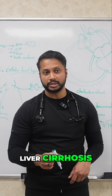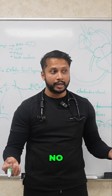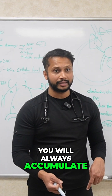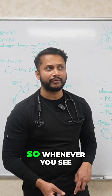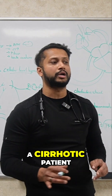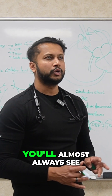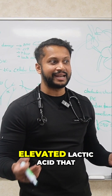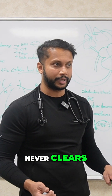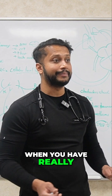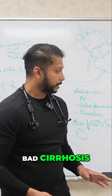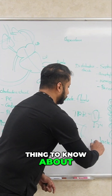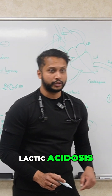If you have liver cirrhosis, your Cori cycle cannot work properly. As a result, you will always accumulate lactic acid. So whenever you see a cirrhotic patient, you will almost always see that they have an elevated lactic acid that never clears — especially with really bad cirrhosis. That's the important thing to know about lactic acidosis.